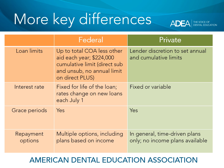The interest rate on federal student loans is fixed for the life of the loan, and the rates change on new loans every July 1. With private loans, you can normally get either a fixed or a variable rate depending on what you choose and the terms offered by the private lender. In general, there are grace periods on both federal and private loans. Always check with the private lender to be sure you know if there's a grace period and how long it is. Grace periods on federal student loans are generally six months.